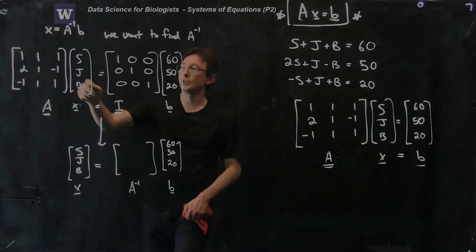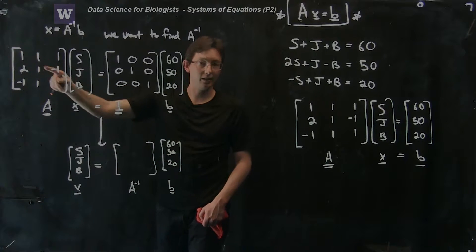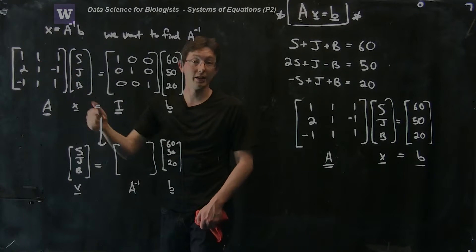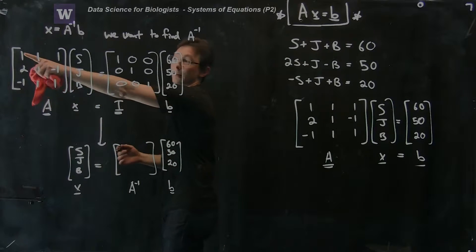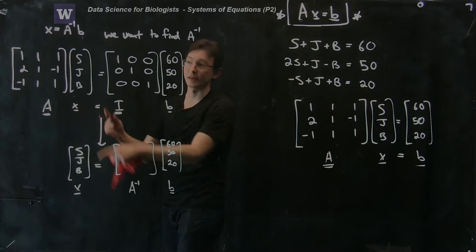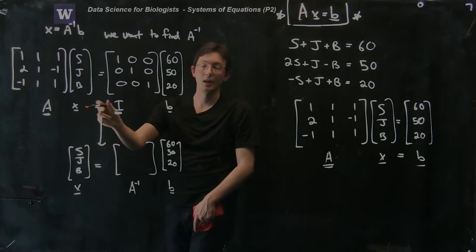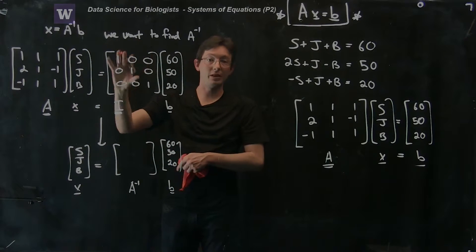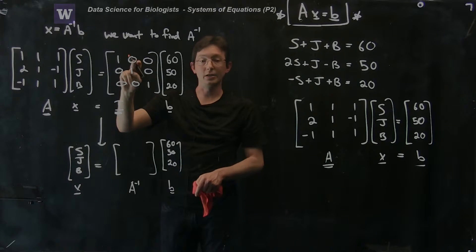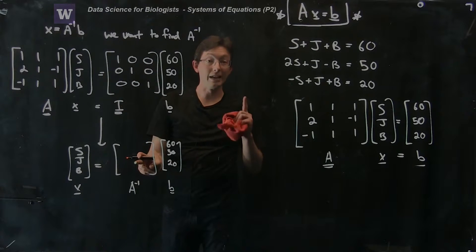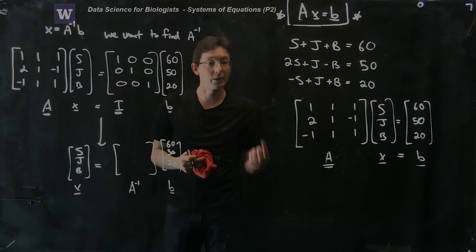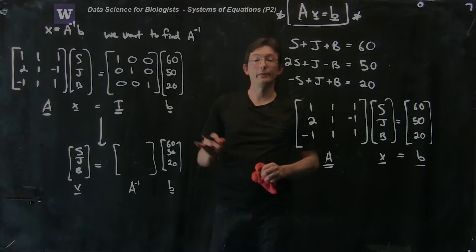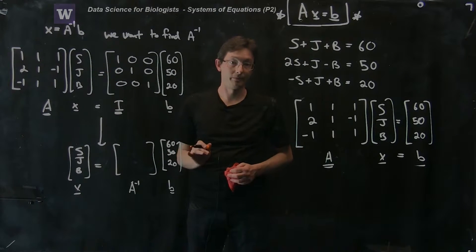By going through the procedure of diagonalizing this left-hand matrix A — turning it into an identity — and doing the exact same operations to the matrix on the right, it is actually going to turn into the inverse of A. So this is how we solve for the inverse of A practically, and we're going to work through it for this example.